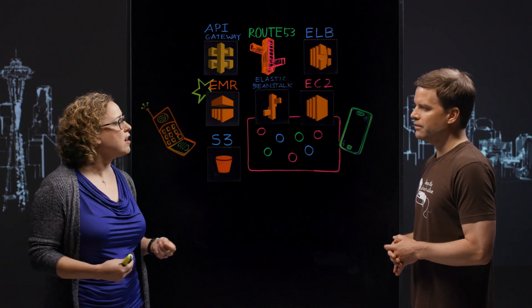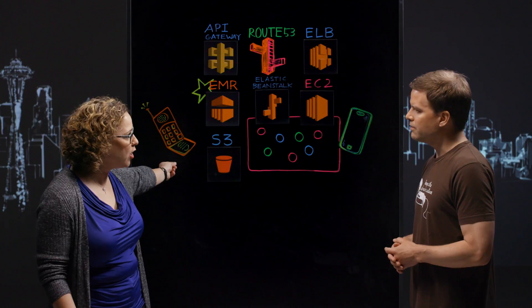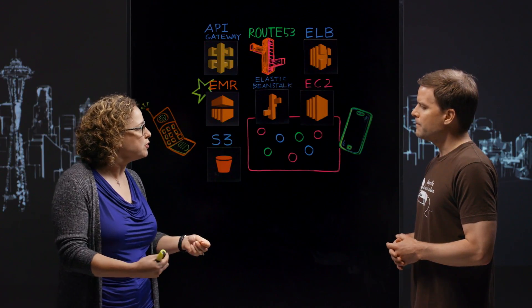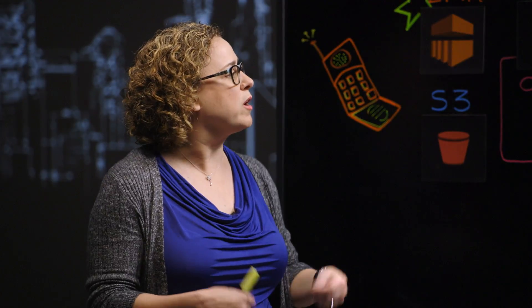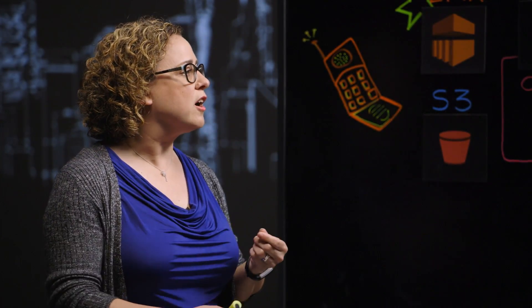If you have a particular problem with a particular product, you can put into the search engine some attributes and narrow down what serial numbers might be impacted, what is the scope of the problem, and things like that. Once you're there, the second step is to understand why that might be happening.